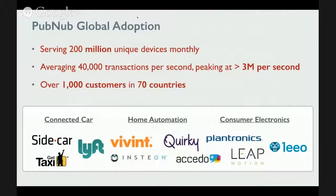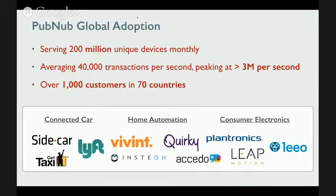We have thousands of customers on our data stream network. You can see some of the logos — we have Lyft in the connected car space, Insteon in home automation, Plantronics in consumer electronics. Currently we have 200 million devices a month on our network, with peaks of 3 million transactions every second.